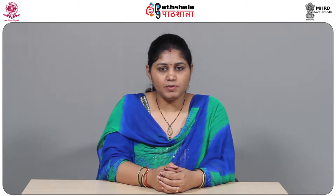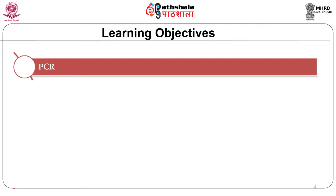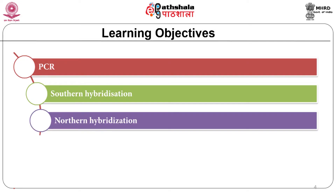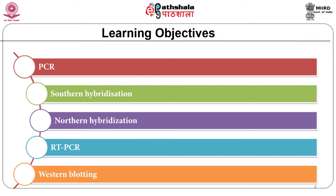These confirmation techniques include polymerase chain reaction to amplify the transgene, Southern hybridization to study the integration and copy number of the transgene, qPCR to study its zygosity, Northern hybridization or RT-PCR to study its transcription, and Western blotting to study whether the transgene is expressing the protein it codes for. The learning objectives for this module cover PCR, Southern hybridization, Northern hybridization, qRT-PCR, and Western blotting.